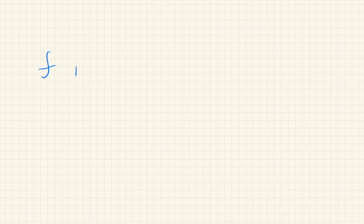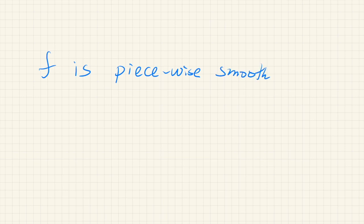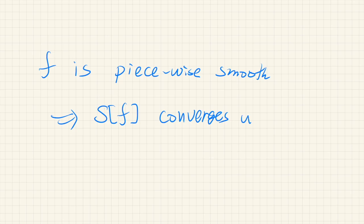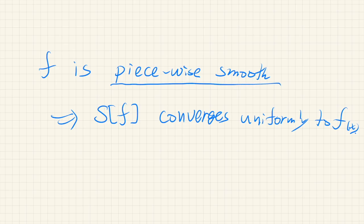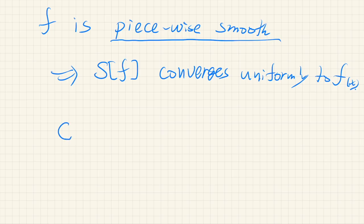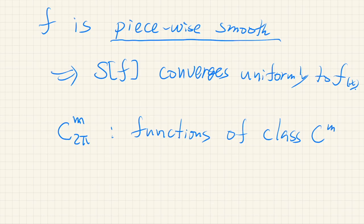The goal of this video is to prove that if a function f is piecewise smooth, then the Fourier series of that function converges uniformly to f. The meaning of piecewise smooth is the following: let us denote by C_{2π,m} the set of functions of class C^m, that is m times continuously differentiable functions with period 2π.